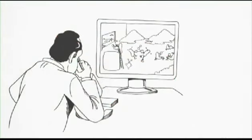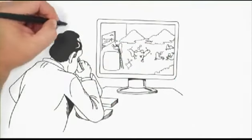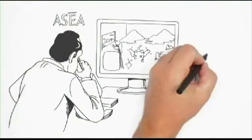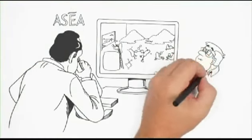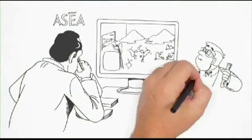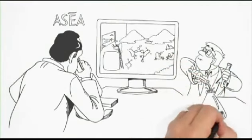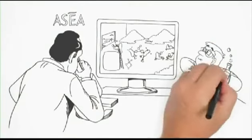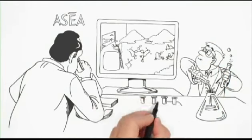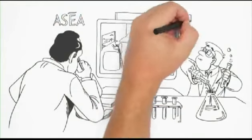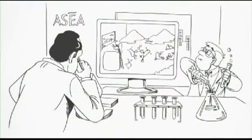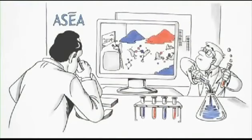That's just what a company called ASEA does. We begin with a pure, pristine saline solution. Then, using a highly protected and patented electrochemical process, we break apart the bonds that hold the sodium, chloride, hydrogen, and oxygen atoms together. These free-floating atoms are then recombined in new configurations. And voila, redox signaling molecules.